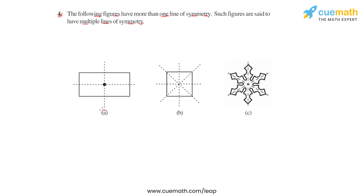In the first figure, which is figure A, we can see a rectangle and we see the lines of symmetry being represented by dotted lines. So these are the two lines of symmetry. For this particular figure — a rectangle — we can say that there are multiple lines of symmetry, and the number of lines of symmetry is two.